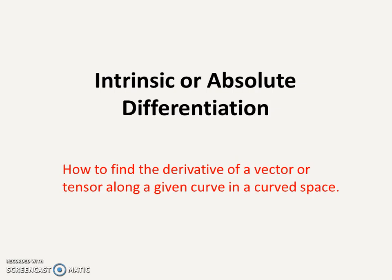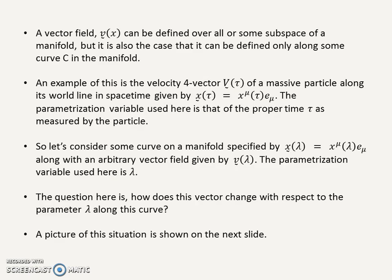This video looks at the idea of intrinsic or absolute differentiation of a vector or a tensor along a given curve in curved space. We have some vector field V, which might be defined over all of the manifold, a subspace of the manifold, or maybe just along some curve. An example of a vector defined along a curve is the velocity 4-vector of a massive particle along its world line in spacetime. That curve is parameterized in terms of the proper time tau, with components and basis vectors given accordingly.